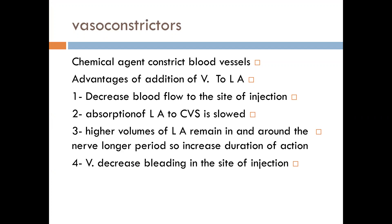Why use a vasoconstrictor with local anesthetic? To decrease the blood flow at the site of injection. This reduces the absorption of local anesthetic into the cardiovascular system, which prolongs the local anesthetic action and increases its duration. A higher volume of local anesthesia remains around the nerve for a longer period.